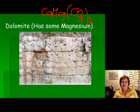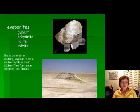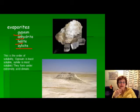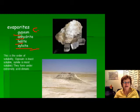This brings us to the evaporite group. The evaporites in order — and you need to know this order — are: gypsum, anhydrite, halite, and sylvite. This order is the order of their solubility, meaning how easily they dissolve in water. Gypsum is the least soluble, and sylvite is the most soluble. Gypsum is calcium sulfate (CaSO4) and also contains some water.